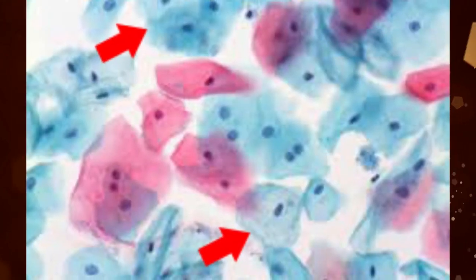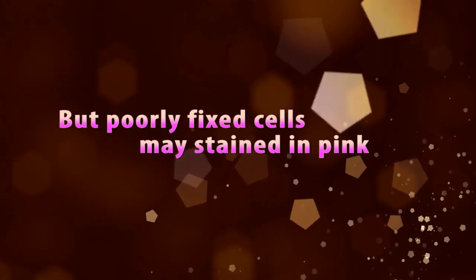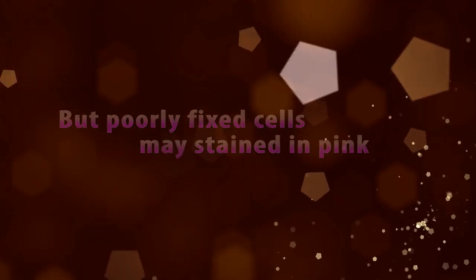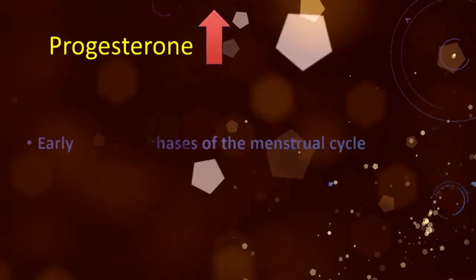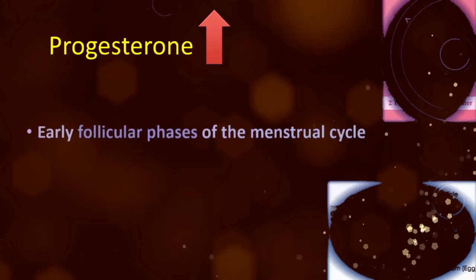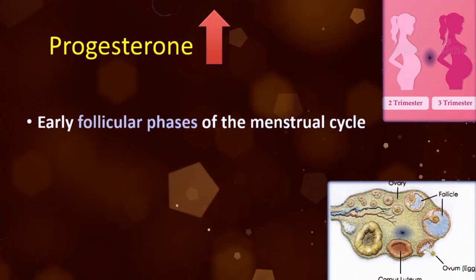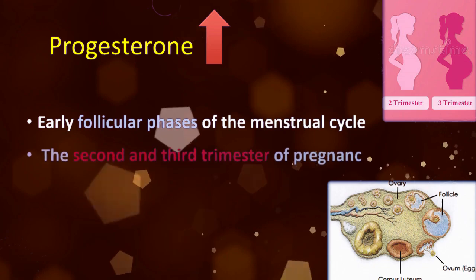The cytoplasm is abundant and translucent, getting a green color, but poorly fixed cells may stain pink. Intermediate squamous cells are seen in abundance when progesterone is at high levels. This occurs during the luteal and early follicular phases of the menstrual cycle, and the second and third trimesters of pregnancy.